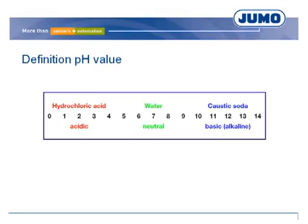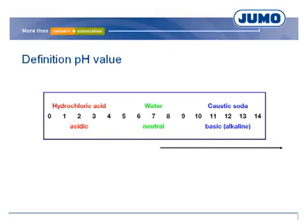Simply said, the pH value describes whether the chemical reaction of a watery solution is acid, neutral, or alkaline. The pH value is a measure for the hydrogen ion concentration. The more hydrogen ions remain in the fluid, the lower the pH value.